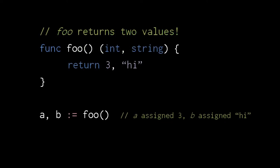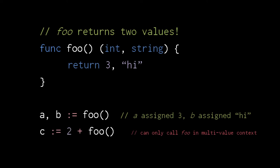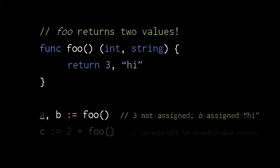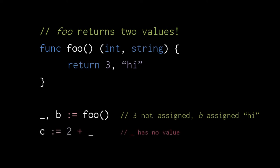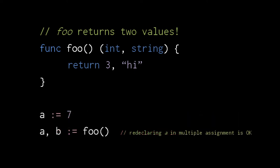A unique feature of Go is that functions can be declared to return more than one value. Here the function foo returns both an int and a string. When we call this function, the returned int is assigned to a, and the returned string is assigned to b. Multi-return functions cannot be called where a single value is expected. Often when calling a multi-return function, we don't care about all the returned values. As a convenience, underscore is a special variable name which doesn't actually get assigned any value — when you assign to underscore, the value is effectively discarded. Go is less picky about re-declaring variables in the special case of multi-value assignment — the compiler won't complain if we effectively re-declare a variable in a multi-value assignment.